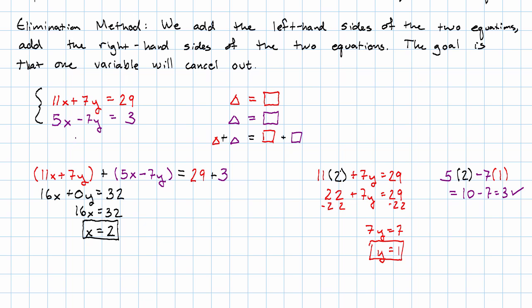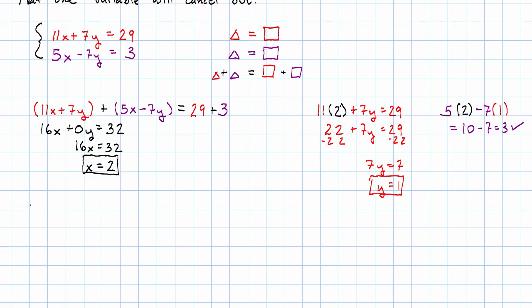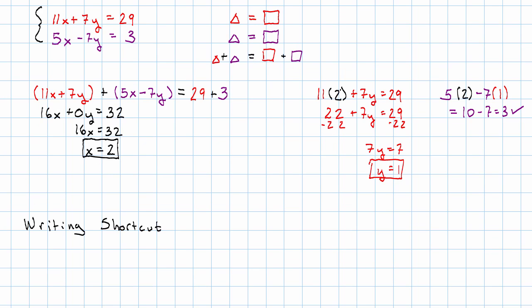We're adding together the two left-hand sides and we're adding together the two right-hand sides. There's a shortcut way of writing this. In this shortcut, we imagine that we're just adding together the two equations. We line up the like terms on each side and then we add down.